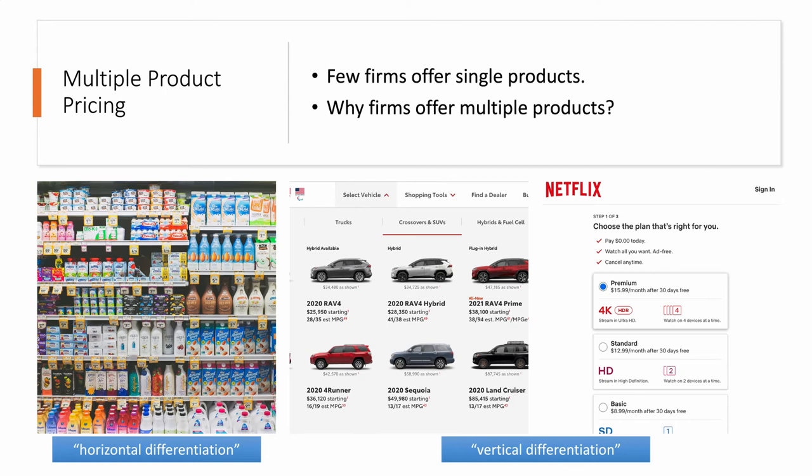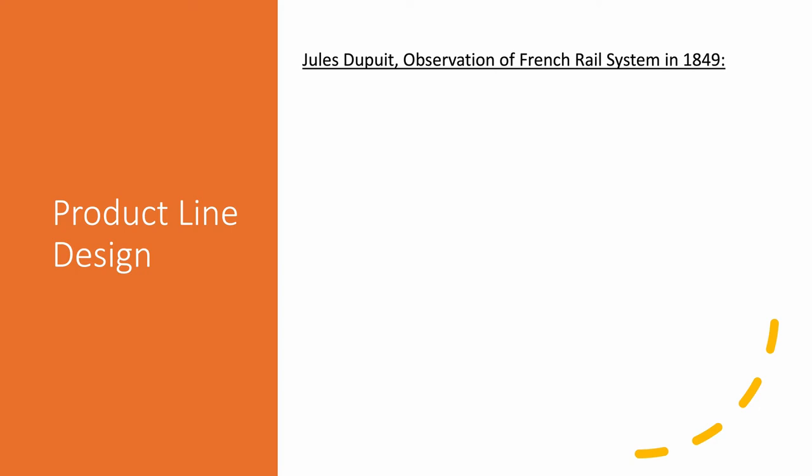At the fundamental level, we're talking about a phenomenon called product line design. This can be physical products, software, or some kind of intangible products. Let me first start with the example of physical products for product line design. This goes way back, more than 150 years ago. A French economist observed the French rail system in 1849.